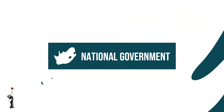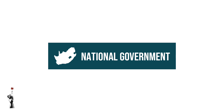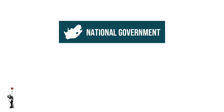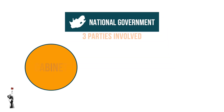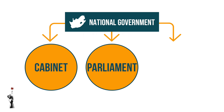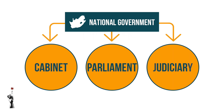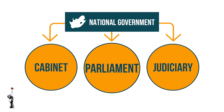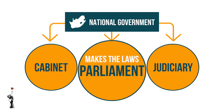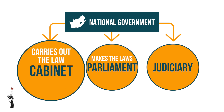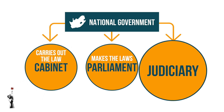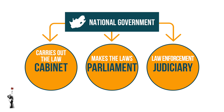Under the national government there are three branches: the cabinet, the parliament, and the judiciary. To summarize briefly: parliament makes the laws, the cabinet makes sure the laws are carried out, and the judiciary decides whether citizens have violated the law or not.